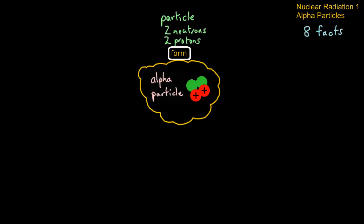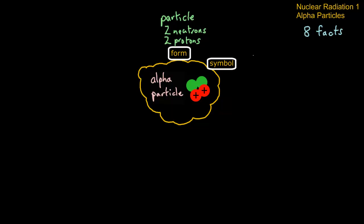The symbol for the alpha particle — if you notice it has two neutrons and two protons, which means the element is helium. With two neutrons and two protons, the atomic mass is four and the atomic number is two.